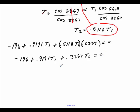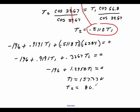So we'll start putting our numbers in. Minus 196 plus 0.9191 T1 plus 0.3267 T1 is equal to 0. We will solve for T1. We'll add these two together first. Minus 196 plus 1.2458 T1 equal to 0. Move the 196 over, divide by that. We will get T1 is equal to 157.33 Newtons. We take that value right there. We multiply it by 0.5118, and that'll give us our T2 value of 80.52 Newtons.